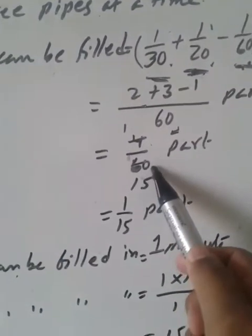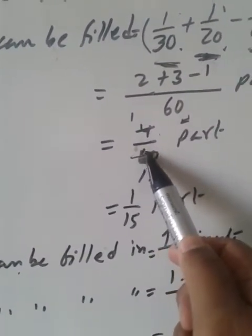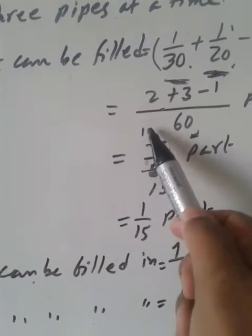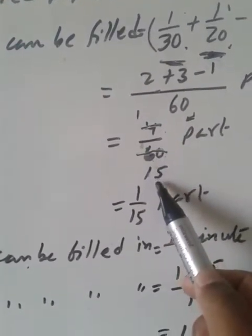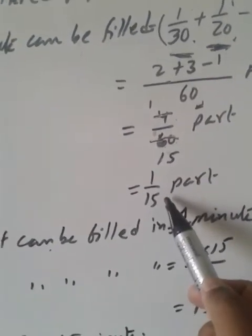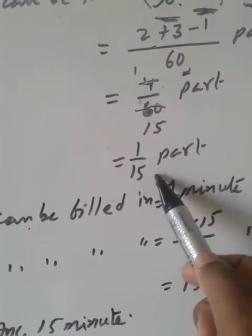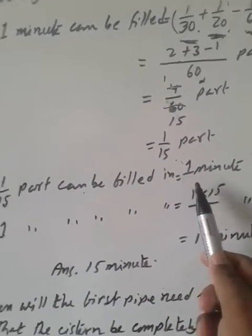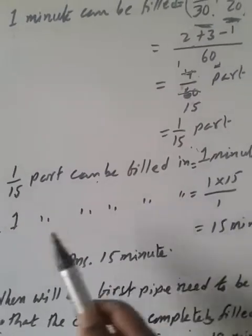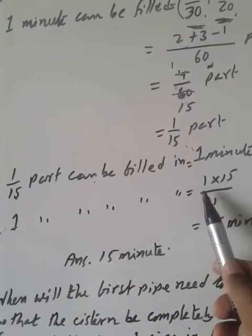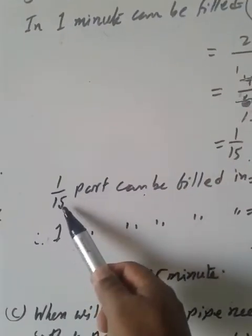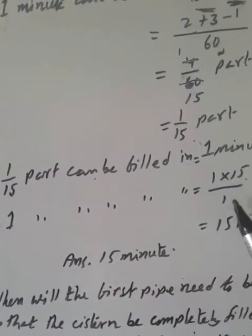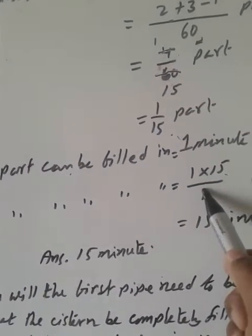So we get 4/60. If we simplify by dividing by 4, we get 1/15. So in one minute, all three pipes together can fill 1/15 part of the cistern. Since 1/15 part is less than 1, taking the reciprocal: the whole cistern can be filled in 15 minutes.